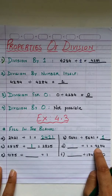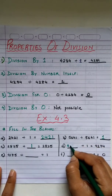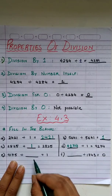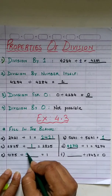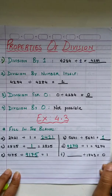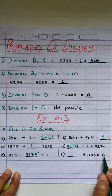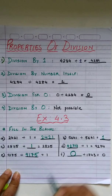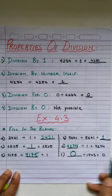Blank divided by 1 gives 9,274. Whenever the divisor is 1, the quotient and the dividend are the same, so the answer is 9,274. Next: 9,175 divided by blank gives 1. The answer is 1 when both dividend and divisor are the same, so the divisor is 9,175. Finally: blank divided by 1,743 equals 0. When the answer is 0, the dividend is also 0, because 0 divided by any number gives 0.